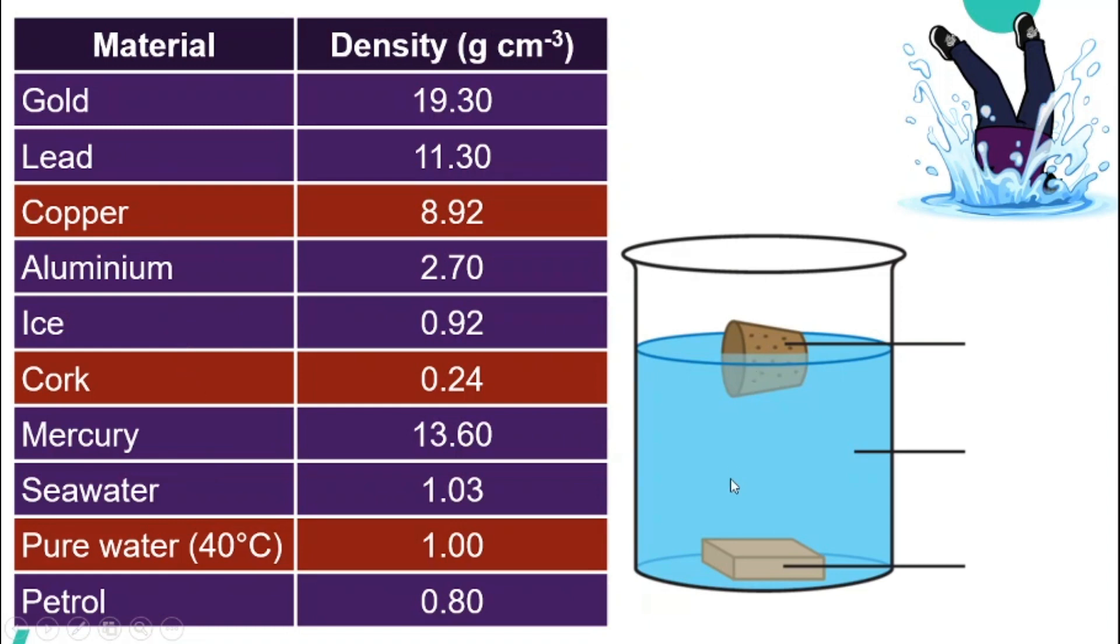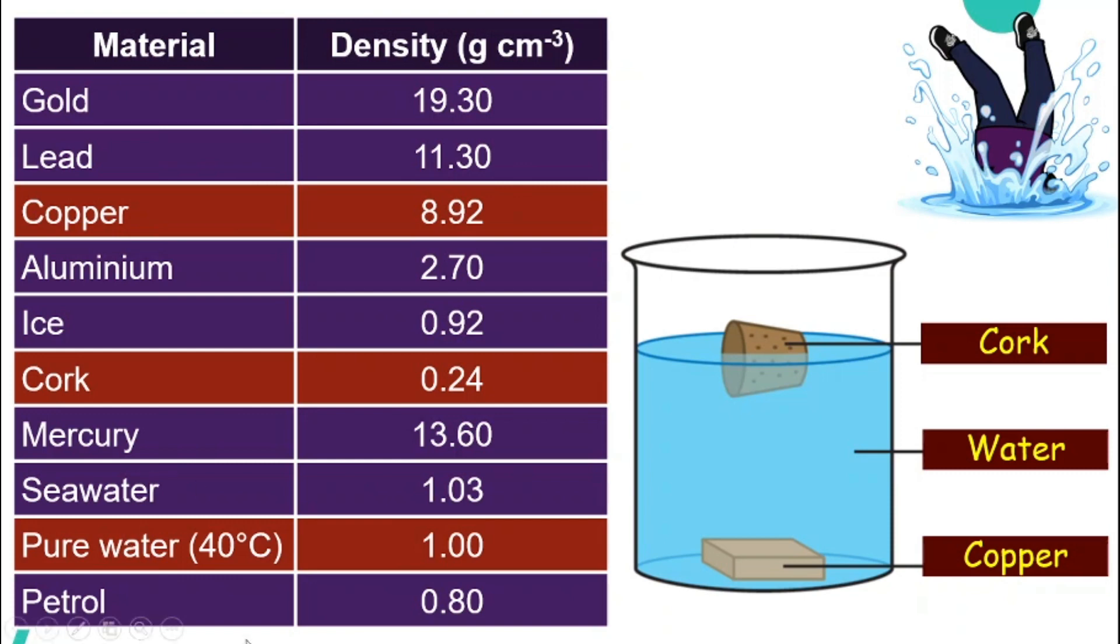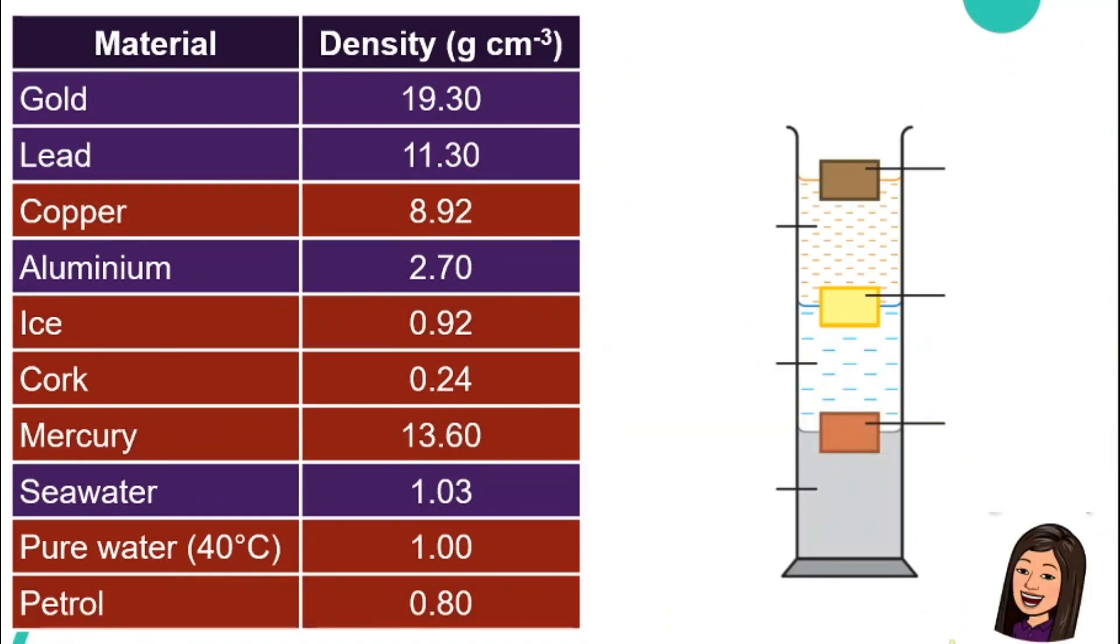How do you know which one is at the bottom? Well, we compare their density with water. So copper has higher density compared to water, and hence copper will sink in water. So the middle one we know is water and the top one is cork. Because if you compare the density of cork with pure water, it is a lot less compared to water. That's why it will float.